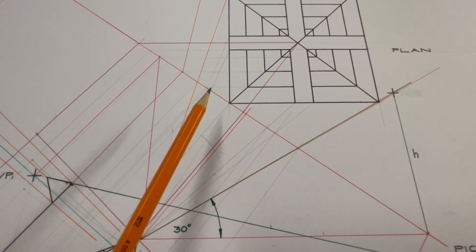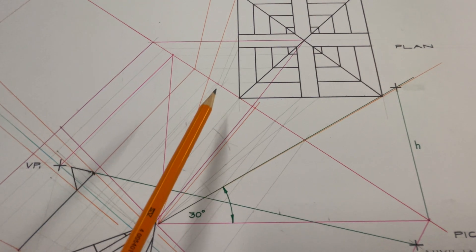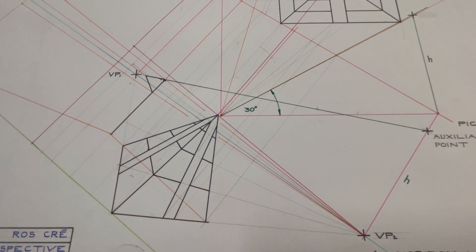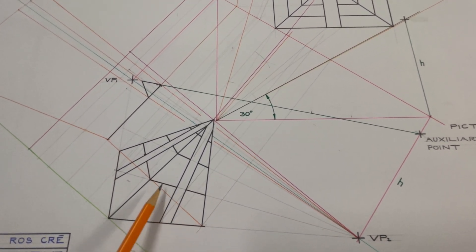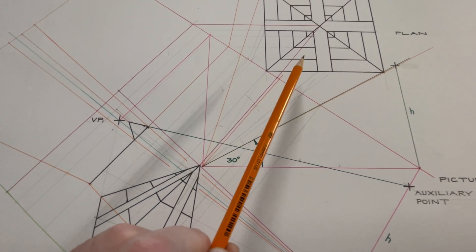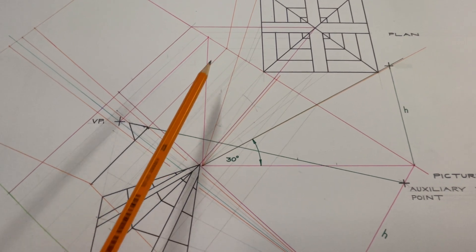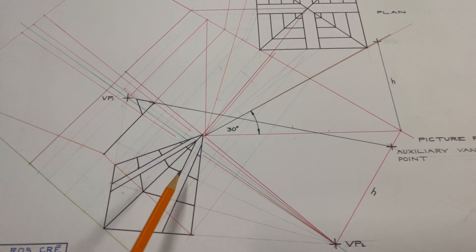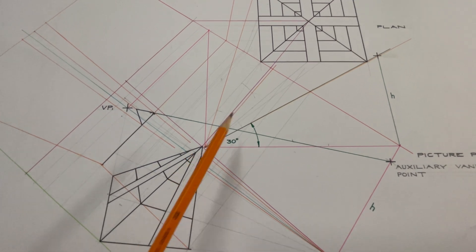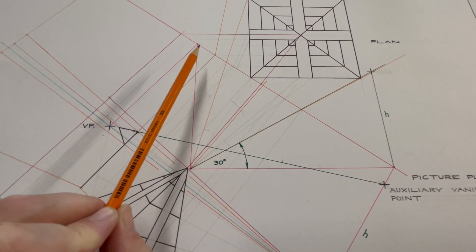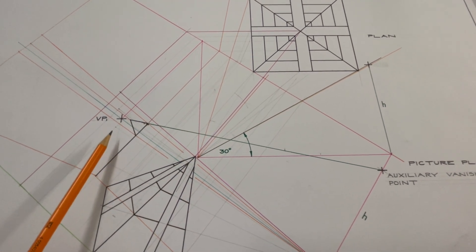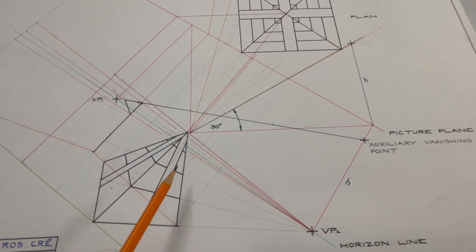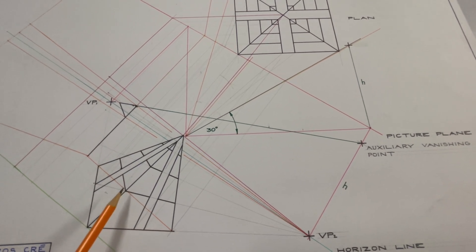Taking the first line, bring it down to the ground line, measure up a height of 30, and bring that back to VP2 — that gives you that line on the face of the pyramid. With the second line, drop it down, measure up a height of 60 and bring that back to VP2. The final line is done the same way with a height of 90: bring it onto the picture plane, drop it down, measure up 90 millimeters, and bring that back to VP2.